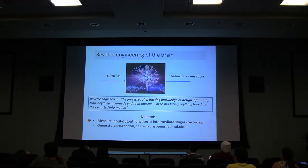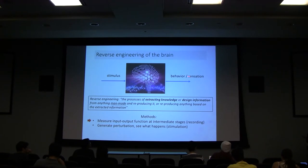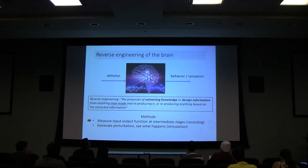As engineers we can also do stimulation — artificially stimulating parts of the brain and observing what changes in behavior. For example, TMS, which Dr. Shamir has mentioned, places a coil on the skull delivering a magnetic field to stimulate a part of the brain. You can also use electrode stimulation or optical stimulation, which I'll introduce later.